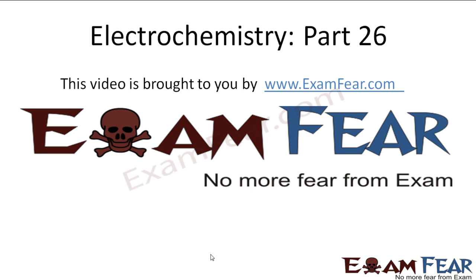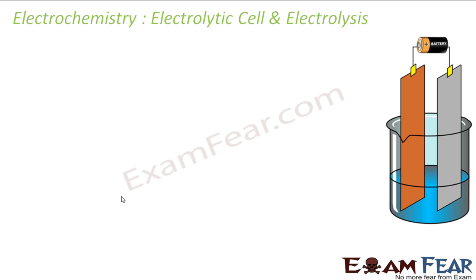This video on electrochemistry part 26 is brought to you by examfeu.com. Now let's understand a very critical topic called electrolytic cell and electrolysis. In an electrolytic cell we do just the reverse of what we do in a galvanic cell. Here the chemical reaction is done using electricity. A non-spontaneous reaction, which won't occur on its own, is made to occur using electricity. An external source of voltage is applied to bring about a chemical reaction.